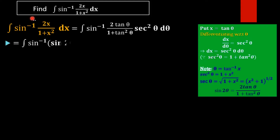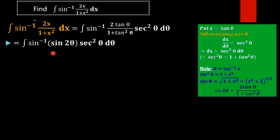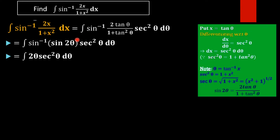So the integral becomes the integral of sin inverse(sin 2θ) times sec²θ dθ. Now, sin inverse of sin 2θ is simply 2θ, since sin and sin inverse cancel each other. We get the integral of 2θ · sec²θ dθ, which is now in an integrable form.